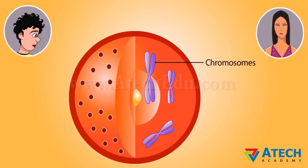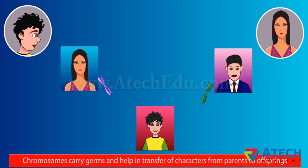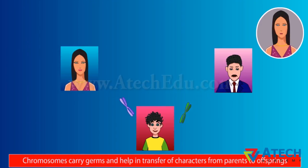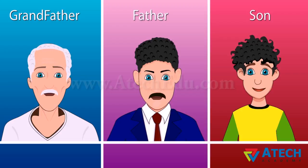What is the importance of these chromosomes? They carry genes and help in transfer of characters from parents to offspring. Do you know why your hair is curly and not straight? Your dad and your grandfather both have curly hair — hence, the genes got transferred to you from them.